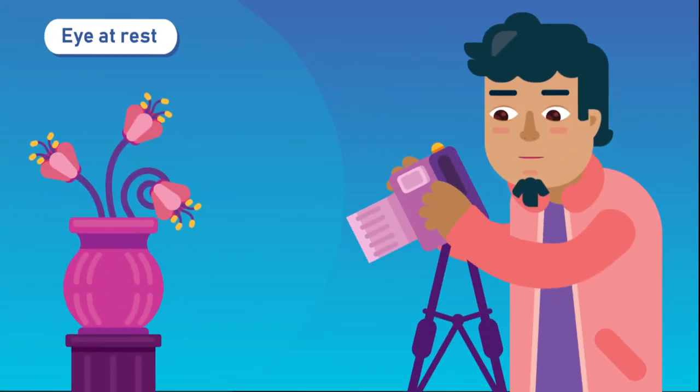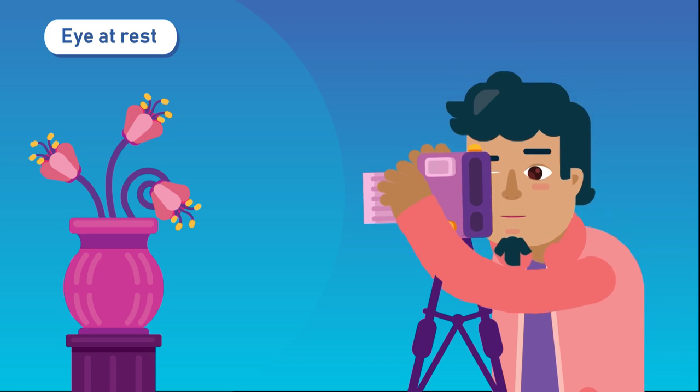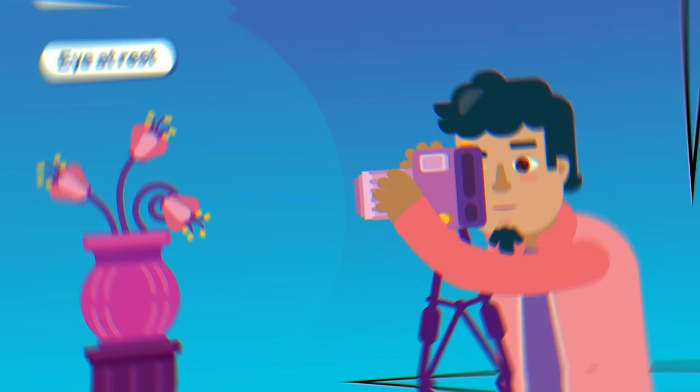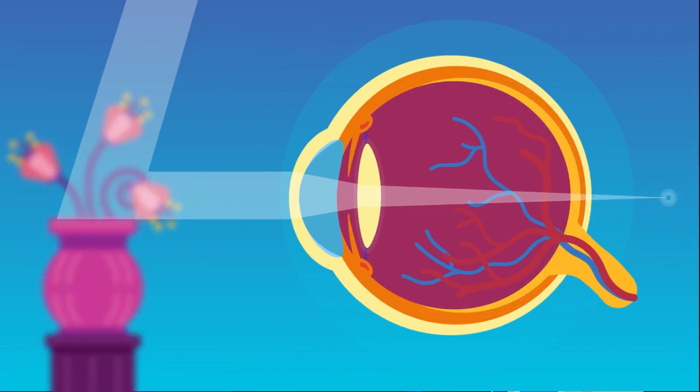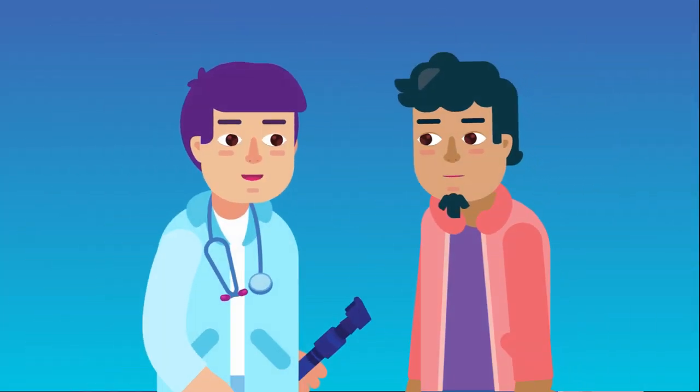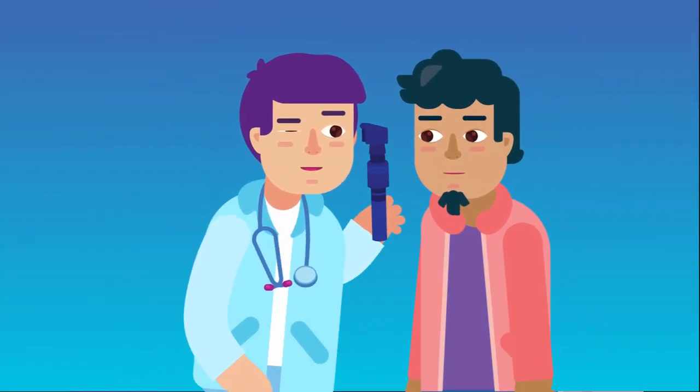Eye must be at rest. Just like a DSLR camera's focusing power can be changed by rotating its zoom lens, the eye changes its focusing power by changing the shape of its lens, with the help of contraction and relaxation of certain muscles located inside the eyeball. These muscles must be at rest to correctly assess the eye's focusing power. This is also the reason why we use cycloplegic or muscle-paralyzing drops before estimating the amount of refractive error.